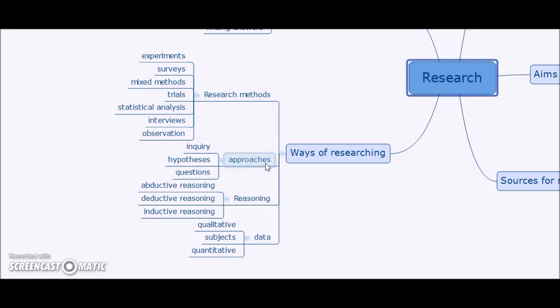There are different ways of approaching our research. We might have some kind of inquiry. We might be defining specific hypotheses. We might be postulating specific research questions. And so some of these things are more specific than others. It depends on the nature of what we're trying to do. There are different ways in which we might apply reasoning, abductive, deductive, inductive, and so on.